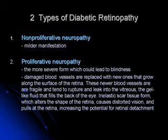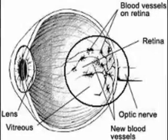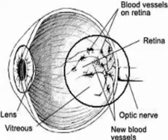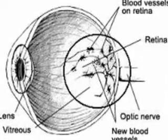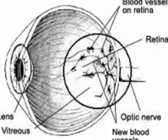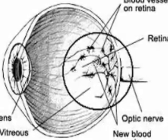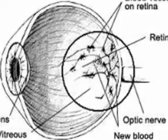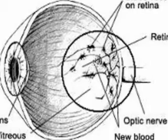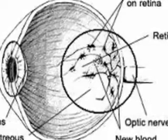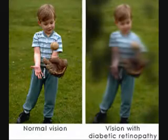In proliferative retinopathy, the damaged blood vessels are replaced with new ones that grow along the surface of the retina. These newer blood vessels are fragile and tend to rupture and leak into the vitreous, the gel-like fluid that fills the back of the eye. Inelastic scar tissue forms, which alters the shape of the retina, causes distorted vision, and pulls at the retina, increasing the potential for retinal detachment.